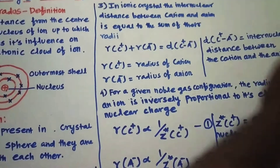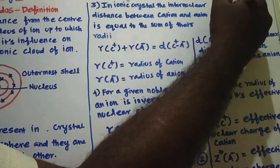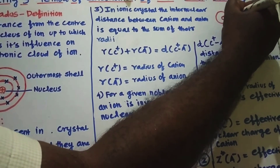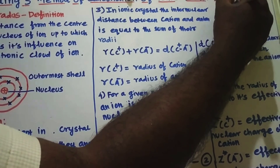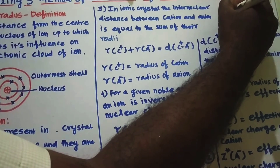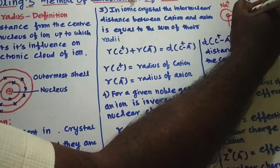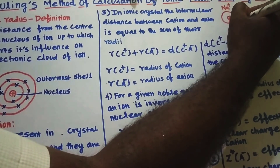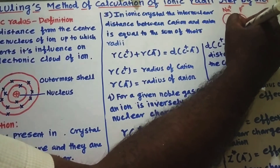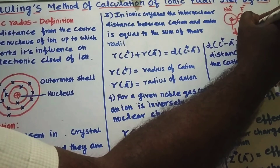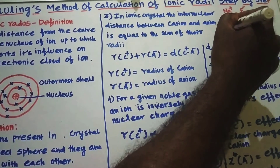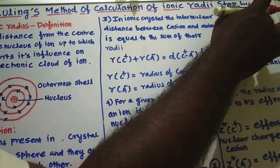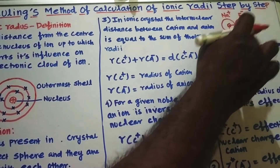Now we are going to see a small diagram. This is the cation, sodium plus, and this is the anion, F minus. This is the radius of the cation and this is the radius of the anion. Then this is the distance between the nucleus of sodium and the nucleus of fluorine — that is called internuclear distance, D(C⁺, A⁻). From this relation: R(C⁺) + R(A⁻) is equal to the internuclear distance between cation and anion.